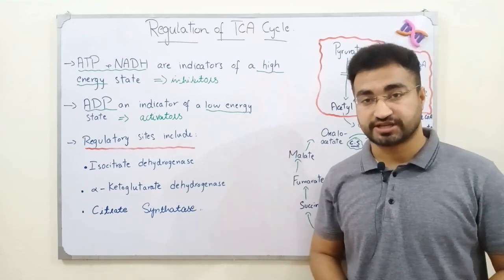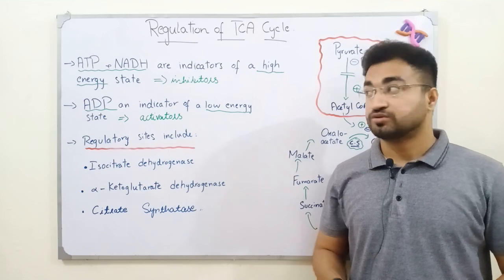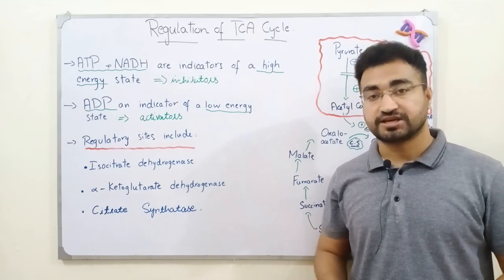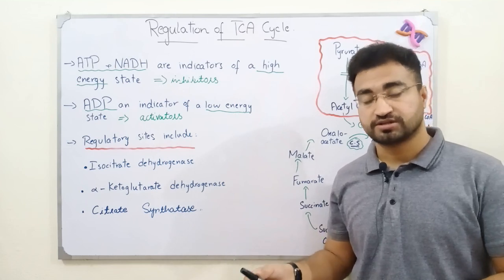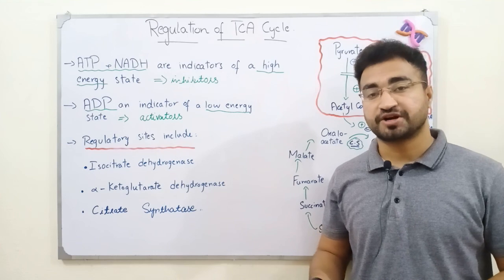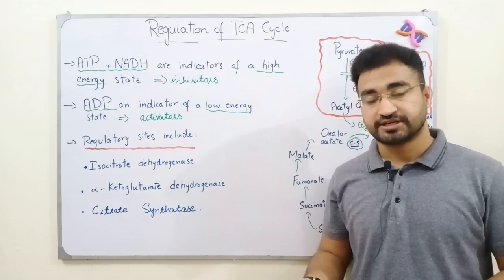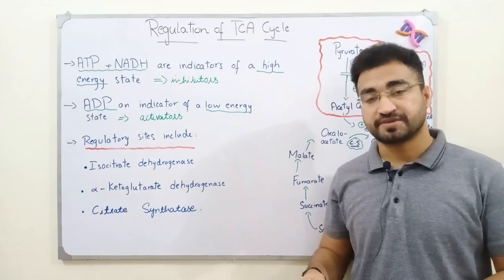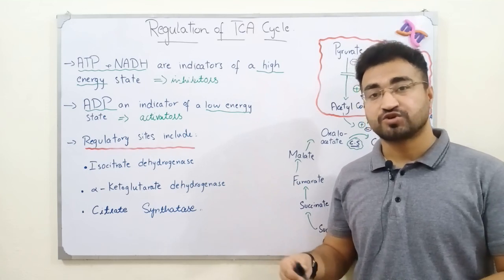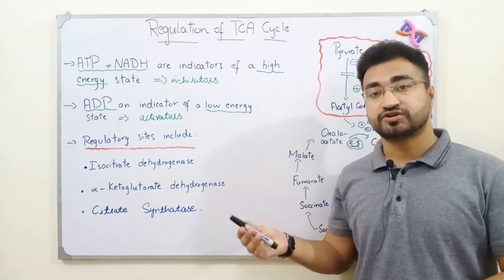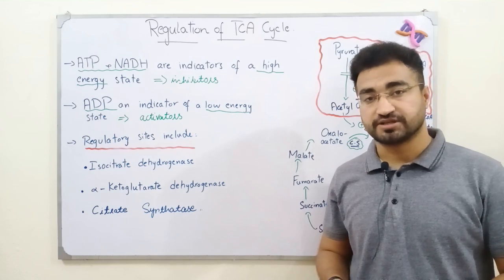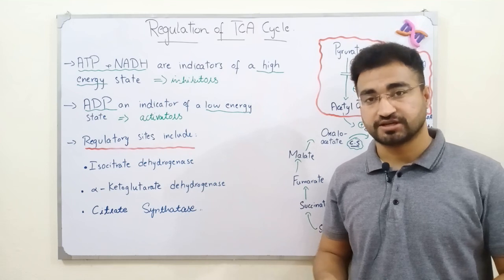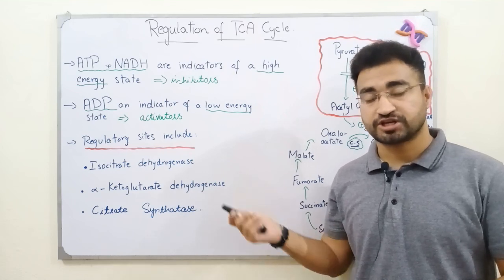So here you have to understand an important point: unlike glycolysis, the TCA cycle is always on. Glycolysis can be turned on and off in the body, but the TCA cycle always remains in an on state. It operates to various degrees depending upon the energy needs of the body. The TCA cycle is never completely shut down in your body — it can be slow or fast, but it always remains in the on state.